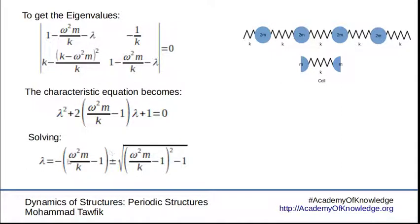In this relation, as you can see, what's under the root can be either positive, zero or negative. If what's under the root is positive, then we have positive real lambdas. If what's under the root is negative, then we obtain a complex value of lambda.